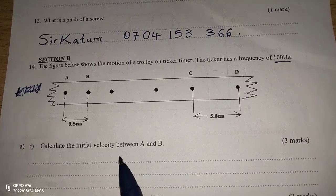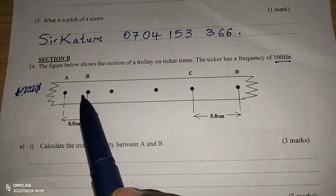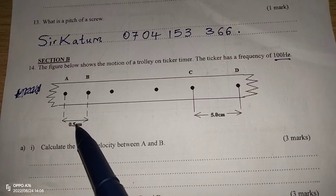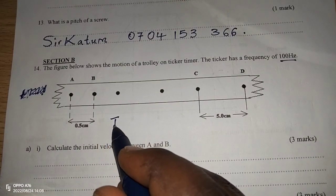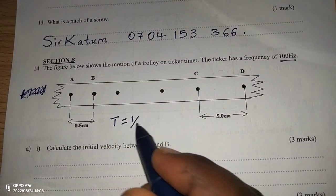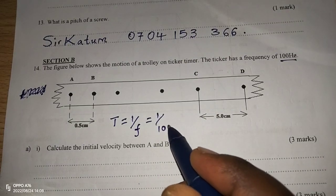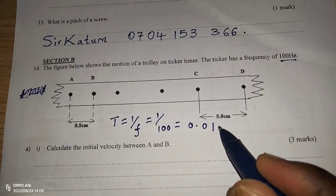Calculate the initial velocity between A and B. Between A and B, we already have the distance 0.5 cm. So, the first thing to calculate is the periodic time T, which is given by the reciprocal of the frequency. The reciprocal of 100, which is going to be 0.01 seconds.